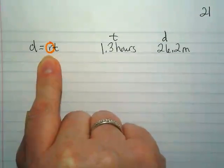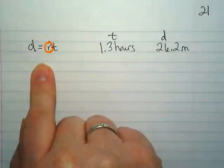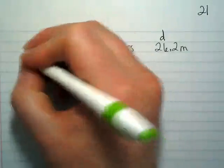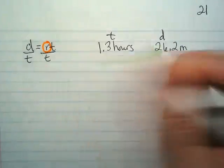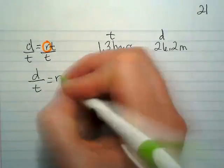And as I just heard people starting to say, what are we going to have to do as our first step with the formula? Divide by T. And now our formula is going to read distance divided by time equals the rate.